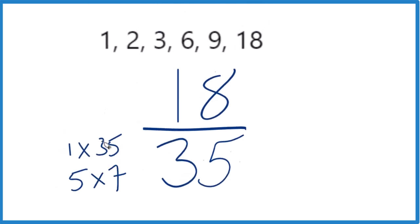So we want to find the common factor, our greatest common factor. It looks like the greatest common factor is 1. That's the only number that goes into 18 and 35 evenly.